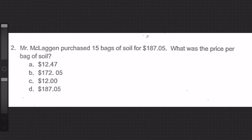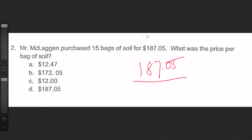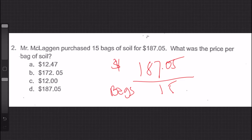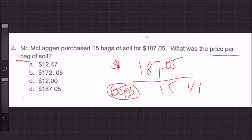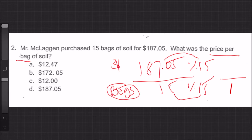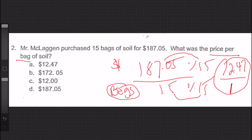Let's go to question two. Mr. McLagan purchased 15 bags of soil for $187.05. What was the price per bag of soil? We can do this a few ways. First, we set up our ratio: $187.05 over 15 bags of soil. We need to get the bags of soil down to one, so we divide both numbers by 15. 15 divided by 15 is one, and 187.05 divided by 15 gives us $12.47. So we have $12.47 for every one bag of soil.